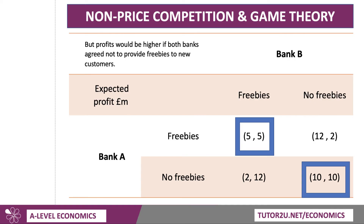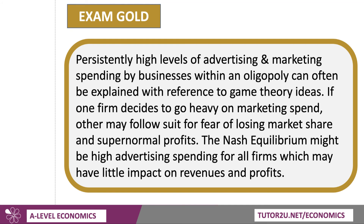They could agree not to do this — let's get rid of the freebies. But of course, then a bank has an incentive to renege on that agreement and start offering freebies again. Because if Bank A offered a freebie but Bank B doesn't, Bank A could make 12 and Bank B would go down from 5 to 2. So there's a situation where they may be locked into a Nash equilibrium where they're both offering freebies. Persistently high levels of advertising and marketing spending can often be explained with reference to game theory. If one firm decides to go heavy on marketing spend, others may follow suit partly because of fear of losing market share and profits. The Nash equilibrium might be high advertising spending for all firms, which may have little actual impact on revenues and profits — Coca-Cola and Pepsi both spend a million dollars on a TV advertising slot, the effects may cancel each other out, but all they've done is add to fixed costs.